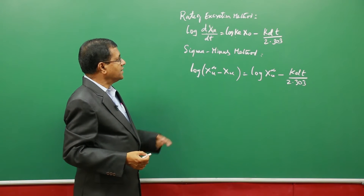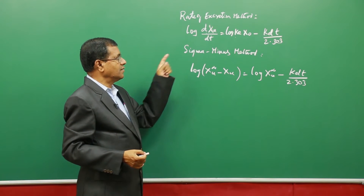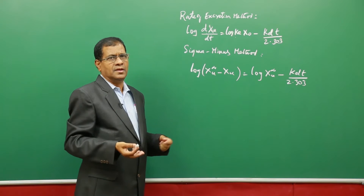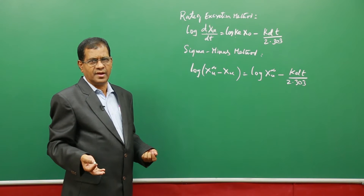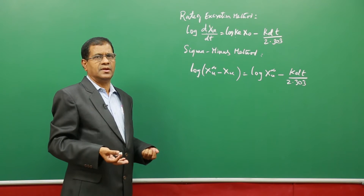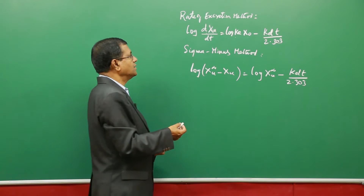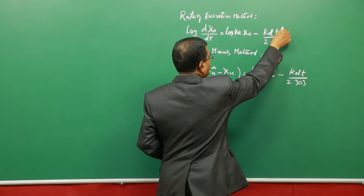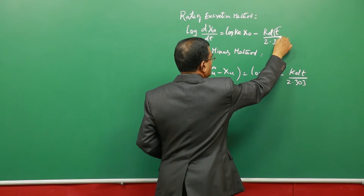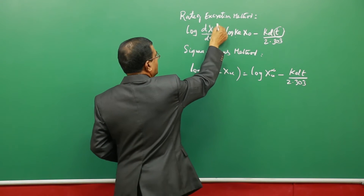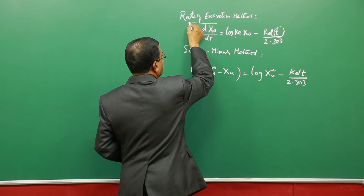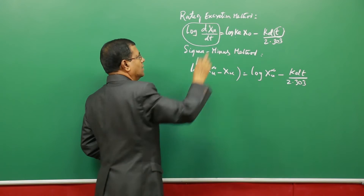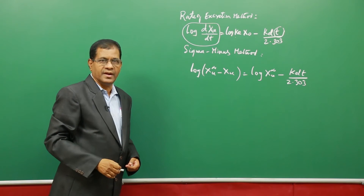This equation is of the type y = mx + c. Whenever it is a linear equation, you can easily plot a graph taking the two variables: time on the x-axis, and log of excretion rate on the y-axis.